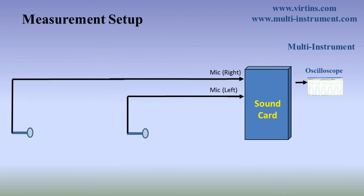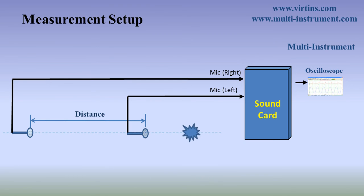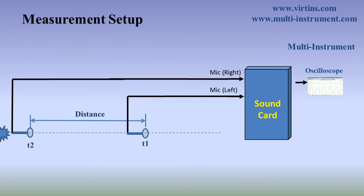The two microphones are placed apart with a known distance. If we clap our hands once along the line of the two microphones, the clap sound will travel to microphone 1 at T1 and microphone 2 at T2. By measuring T2 minus T1, we can determine the sound speed.